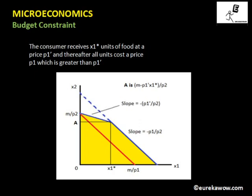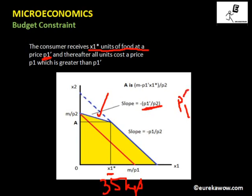Another case: the consumer receives x1 star units of good one at a subsidized price p1 dash, where p1 dash is less than the market price p1. This represents India's Public Distribution System, where the government provides subsidized grain — for example, 35 kg at subsidized rates. As a result, the slope of the budget line decreases for x1 star units, giving a flatter portion with slope minus p1 dash by p2.